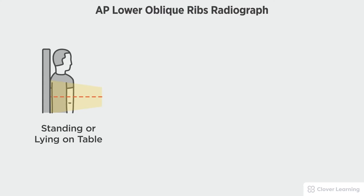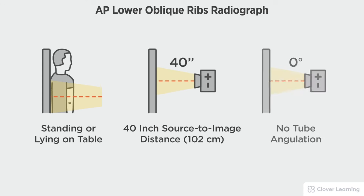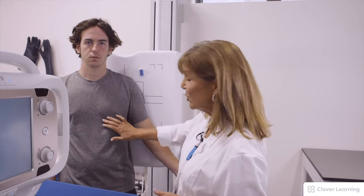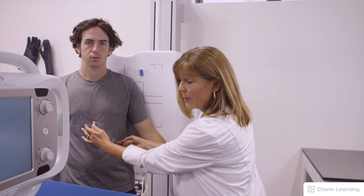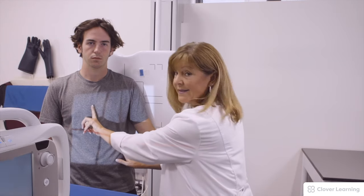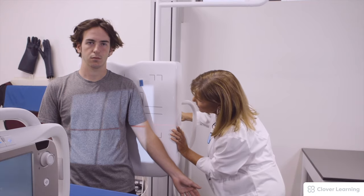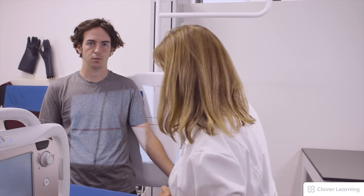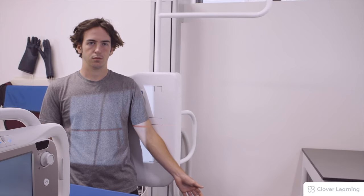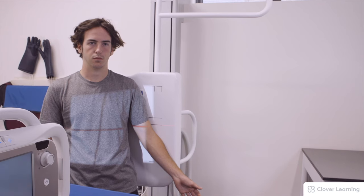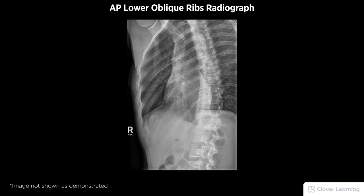In this view we will be demonstrating the AP lower oblique ribs. The AP lower oblique ribs should be performed with the patient standing at the upright bucky or lying on a table with a 40-inch source to image distance and no tube angulation. The patient remains in position and we center halfway between the xiphoid and the lower rib, mid-sagittal plane to the lateral side of the body, to demonstrate the ribs beneath the diaphragm. This is done on expiration — the patient takes a deep breath, blows all the way out, holds, and the exposure is made.